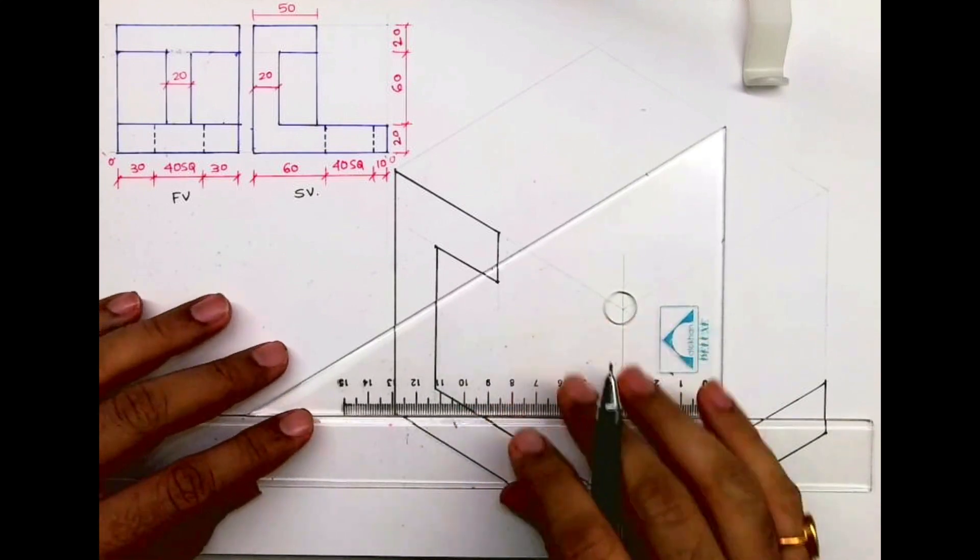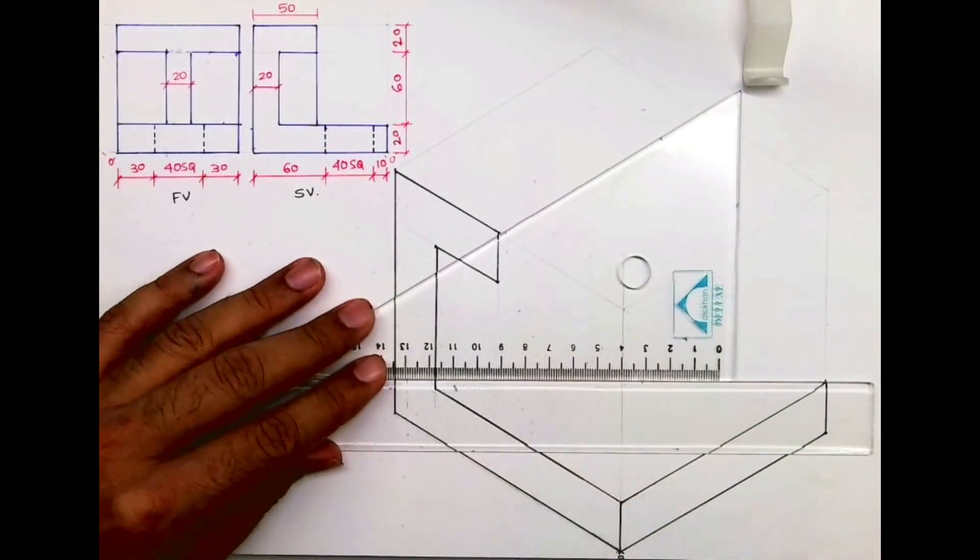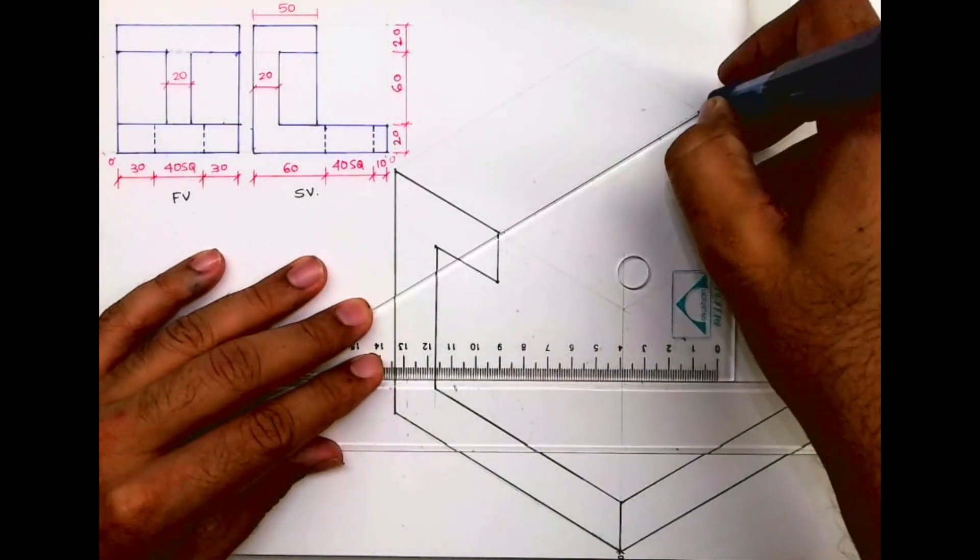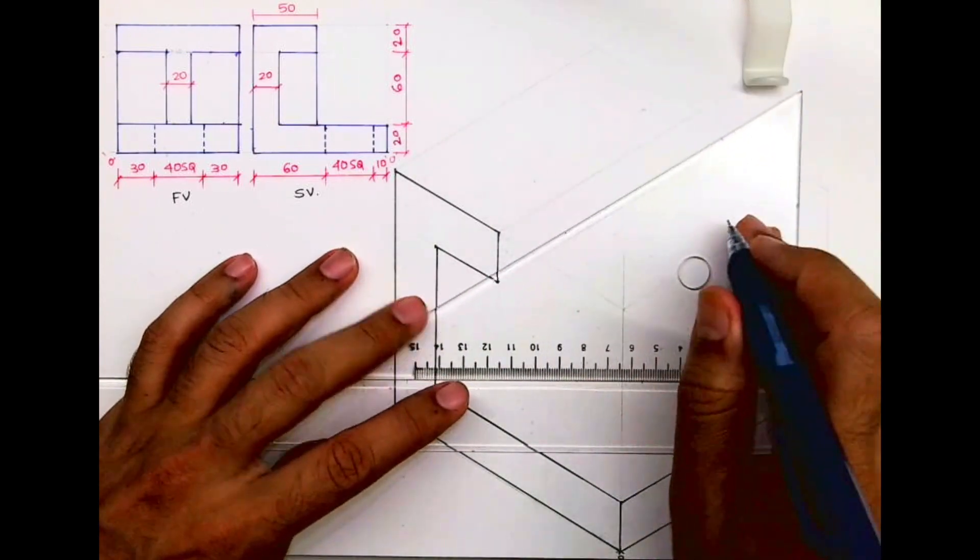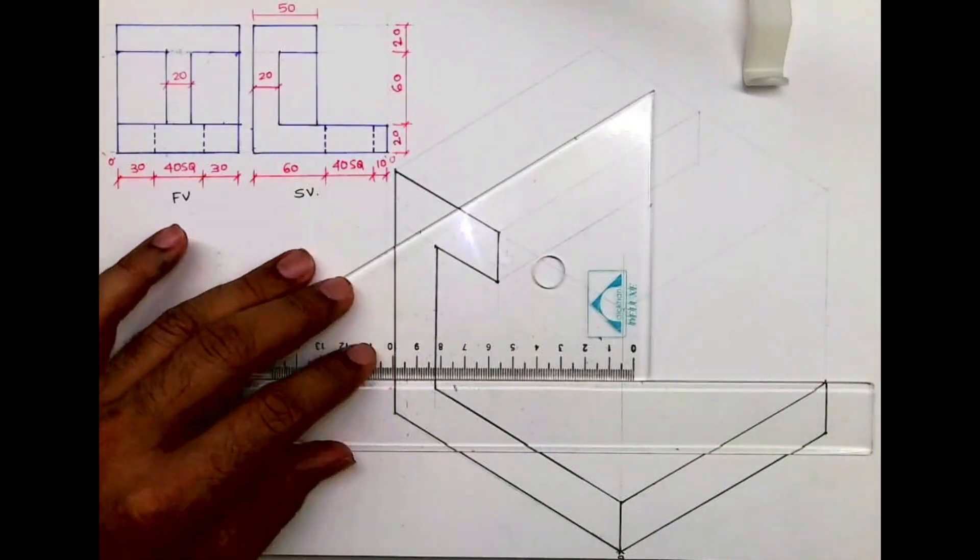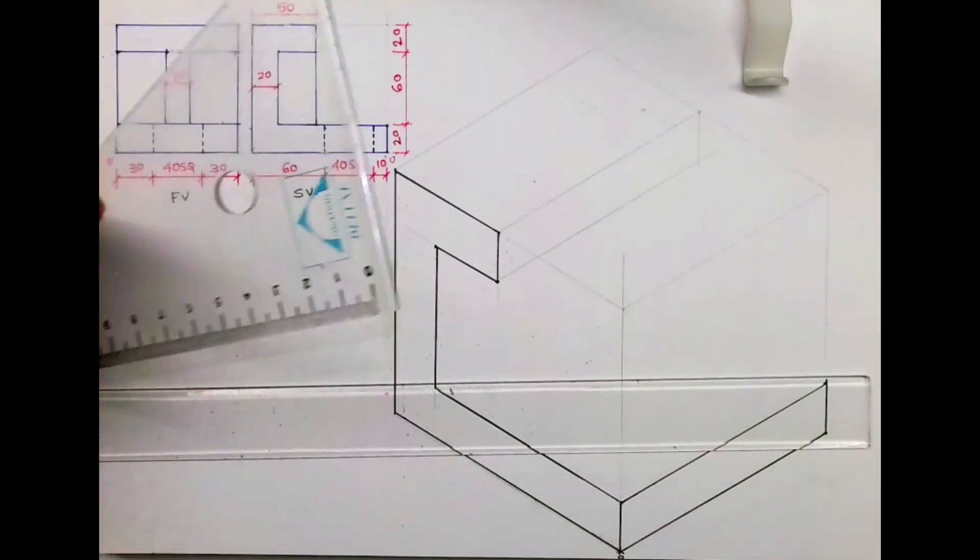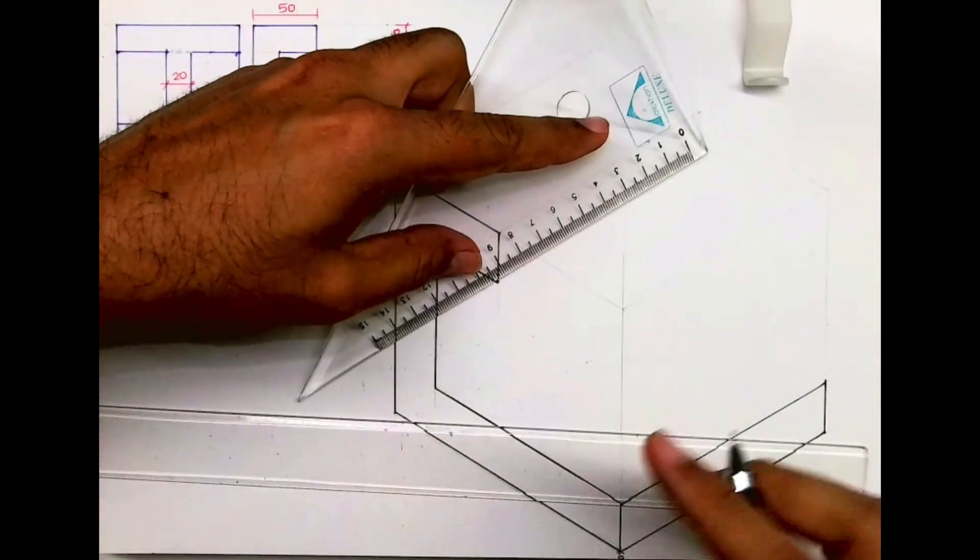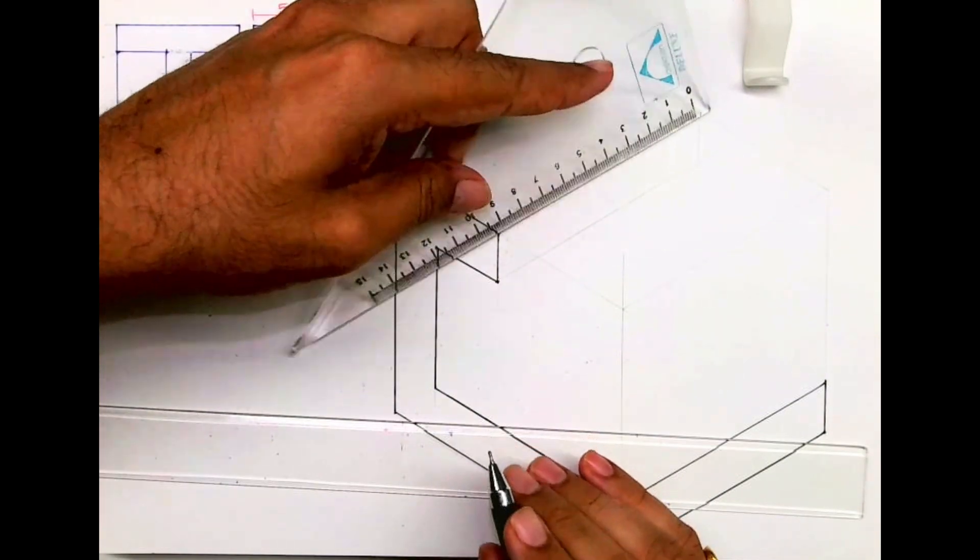Now after this I will draw the upper part. How much I have to go inside? 100. And I will draw a vertical line from here. See, this is 20, so I will take half of this 100 and from center point we'll take 10, 10 on both the side.